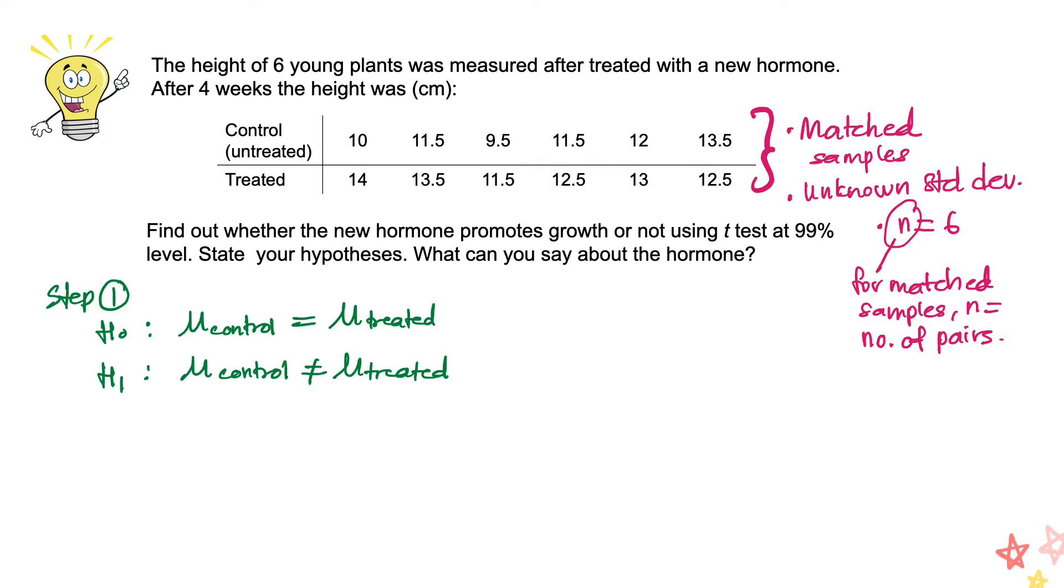The second step is to set the level of significance, that is 0.01, since the confidence level given is 99%, so alpha is equal to 0.01.